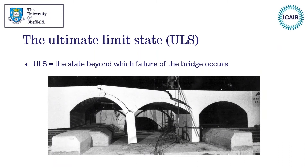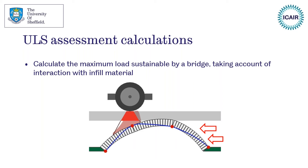How does that relate to limit states? The ultimate limit state is a state beyond which failure of the bridge occurs. We can see a laboratory model bridge where we've got hinges forming and clearly the structure is at the point of collapse. That's relatively straightforward to understand. In terms of the analysis calculations, what I didn't mention is the distribution aspect - I was just introducing the permissible limit state.